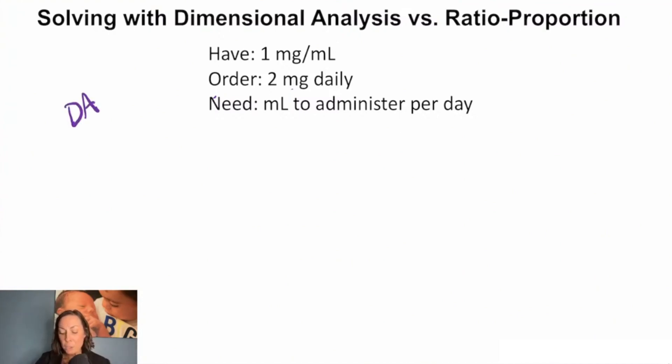So we have here one milligram per one mL. We have an order for two milligrams to give daily, and we need to figure out how many mLs we're going to administer per day.